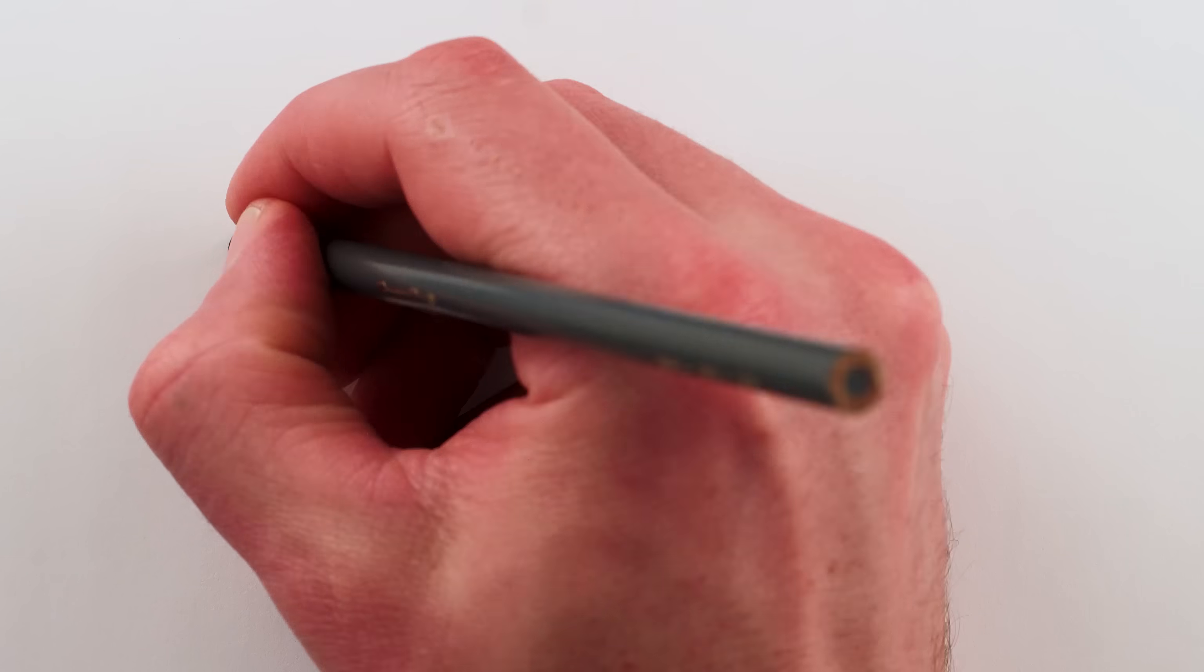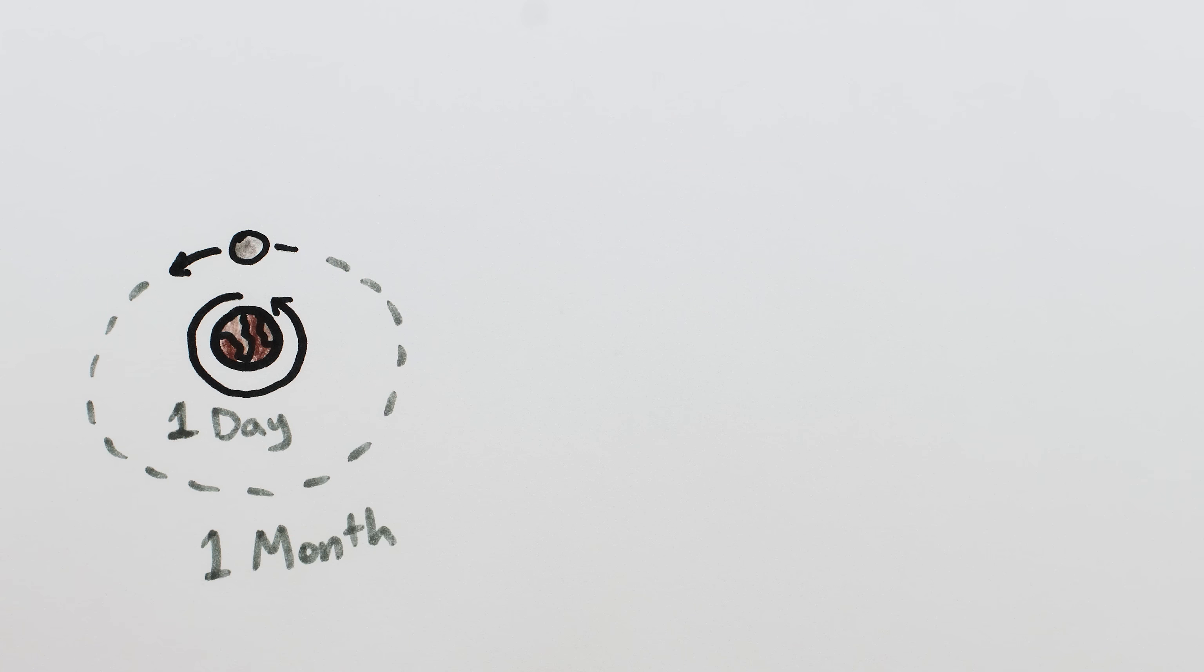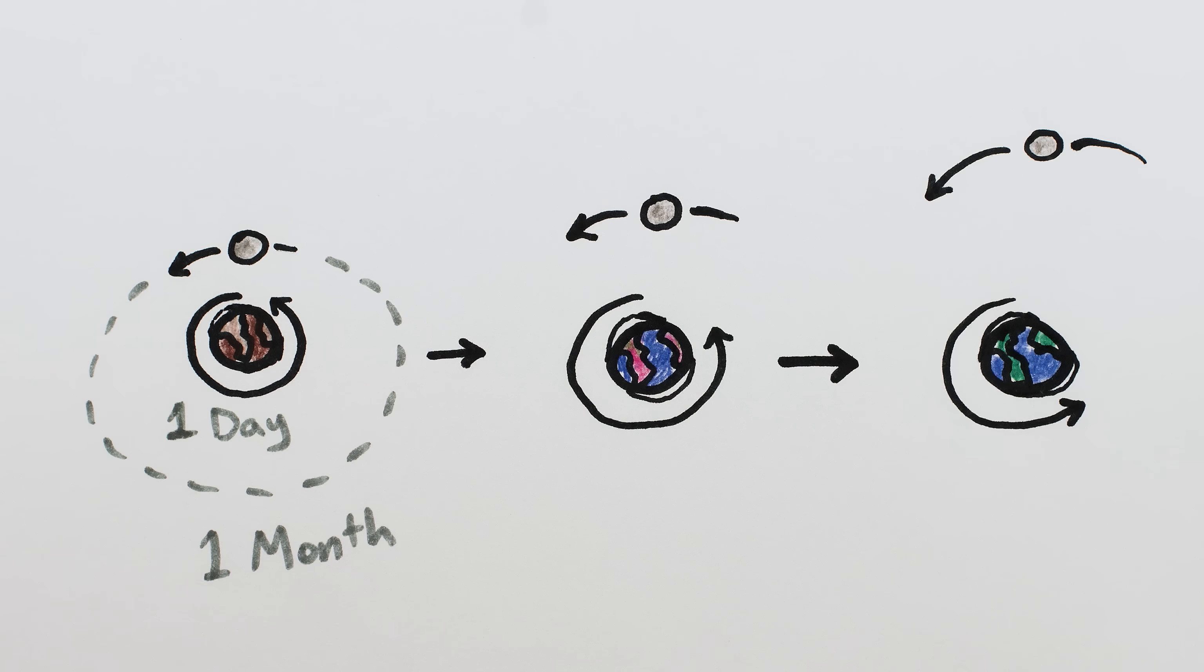However, for all the billions of years after the moon formed, the Earth was spinning faster than the moon was orbiting. As it still does. A day is shorter than a month. And so over time, tidal forces have transferred some of the Earth's rotational momentum to the moon, sending the moon farther and farther away.